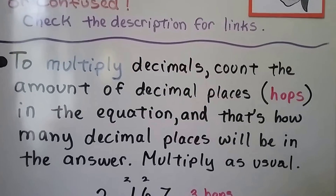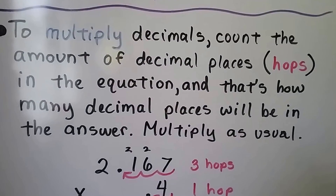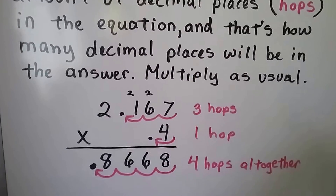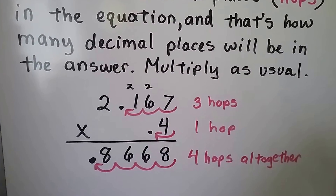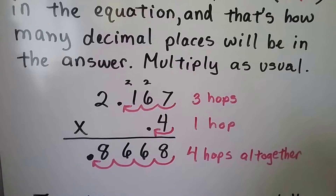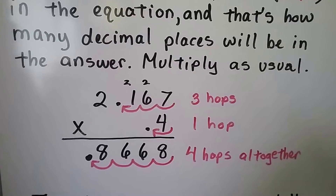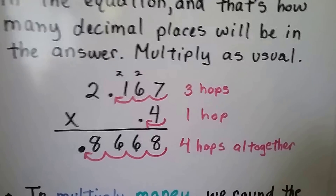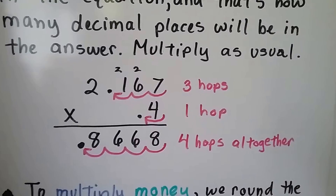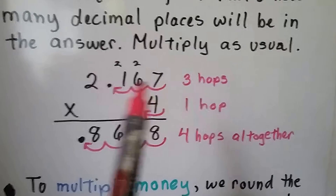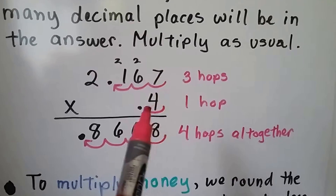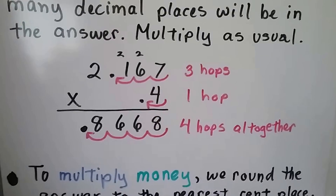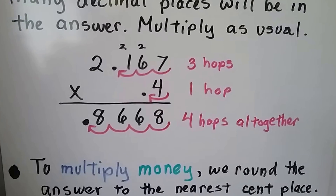To multiply decimals, we count the amount of decimal places — the hops — in the equation, and that's how many decimal places or hops will be in the answer, the product. We just multiply as usual. So in this one, in the actual equation, we've got four hops. We've got three here and one here, so there's going to be four hops in the product. And then we know where to put the decimal point.